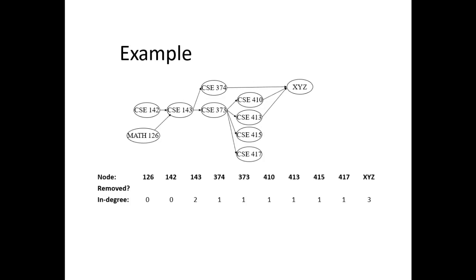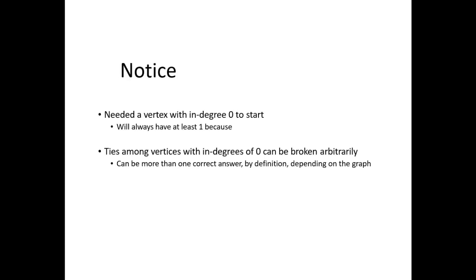We have two illustrations there with the in-degree and whether they are removed or not. We will begin with map 1 to 26 and let's filter to X, Y, Z. Then I will begin with 0, 2, 1, and 3 to the last one: X, Y, Z. If you check the notice, the algorithm picks a vertex with in-degree of 0 to start. We always have at least one because its tiles are among the vertices with the same in-degree of 0. Ties can be broken arbitrarily, there can be more than one correct answer by definition depending on the graph.